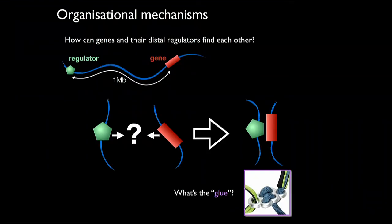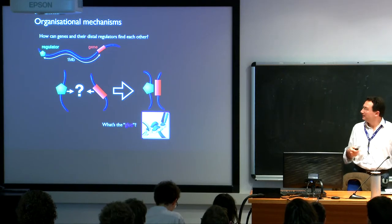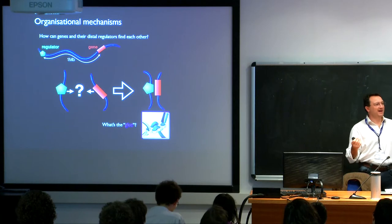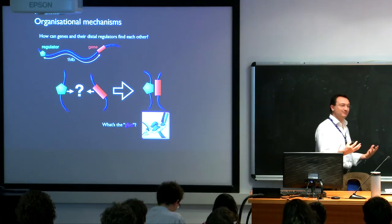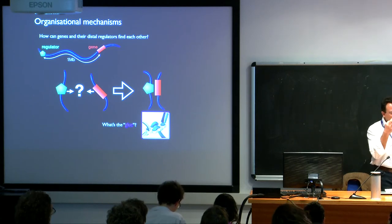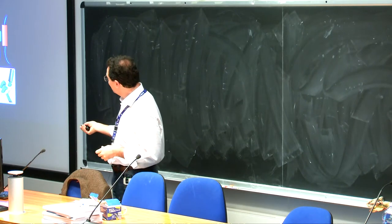Let me get back to the original starting question. How can a regulator and a gene find each other? To give you a sense of scales: a gene in humans is on the order of a few thousands of bases. We know today that regulators can be as far as one million bases away from their target gene — one thousand times more distant than the length of the gene itself. And often regulators are only a few hundreds or a thousand bases long. So the big question is: how do they find each other in the darkness of the nucleus? What are the mechanisms, or in other terms, what's the glue which brings them and holds them together?